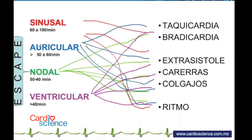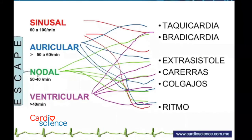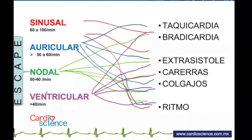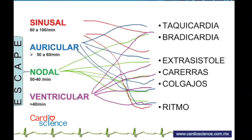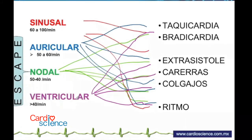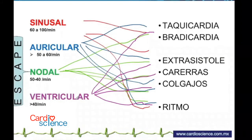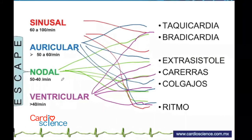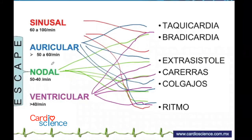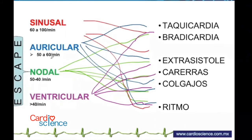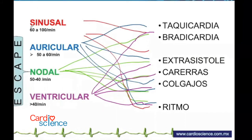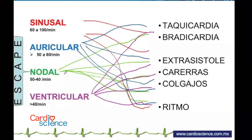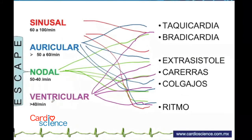El ritmo auricular, cuando el nodo toma el mando, tiene frecuencia entre 50 y 60; es bradicárdico. El ventricular tiene frecuencia abajo de 40. El ritmo nodal tiene QRS no ancho sin onda P; el auricular tiene onda P pero PR corto. Puedo combinarlos: taquicardia auricular, extrasístoles nodales, carreras de extrasístoles nodales, carreras de taquicardia ventricular.